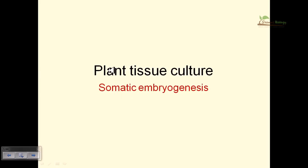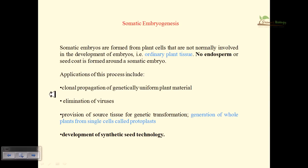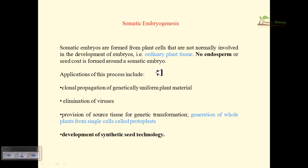This makes the topic much more interesting. Plants have the enormous capability of totipotency — from one plant cell, a whole living plant can be generated. In somatic embryogenesis, the embryo is generated from ordinary plant tissue. No endosperm or seed coat is formed around the somatic embryo, whereas embryos produced from germline cells are covered by a seed coat and produce a hard seed.